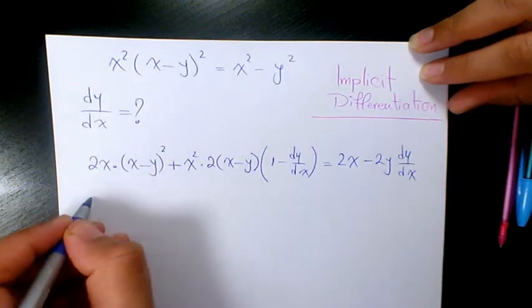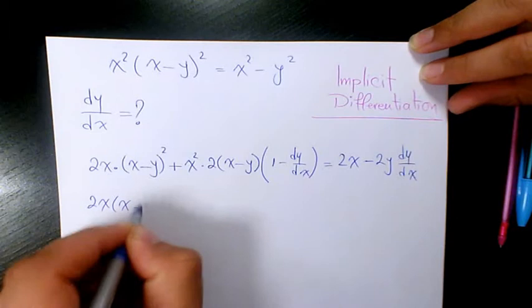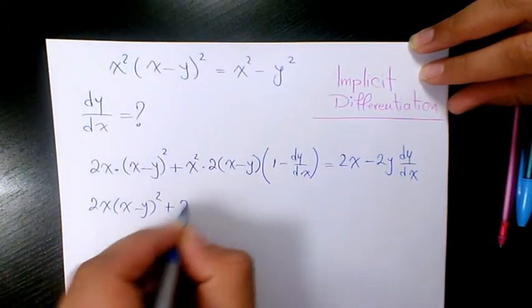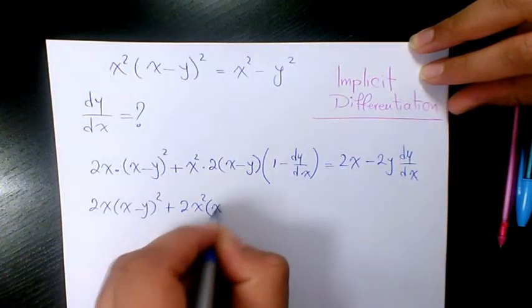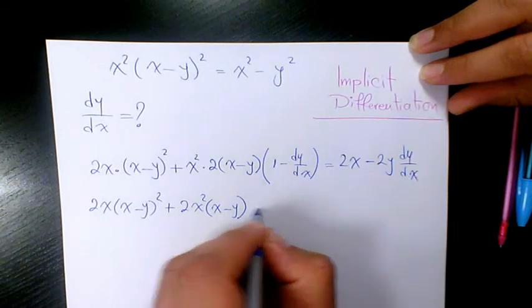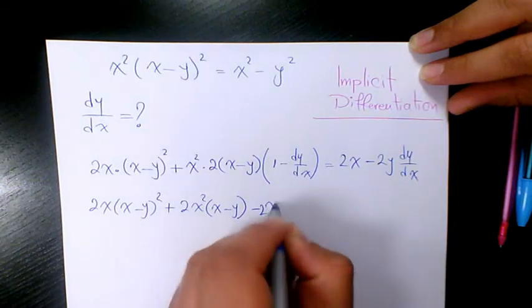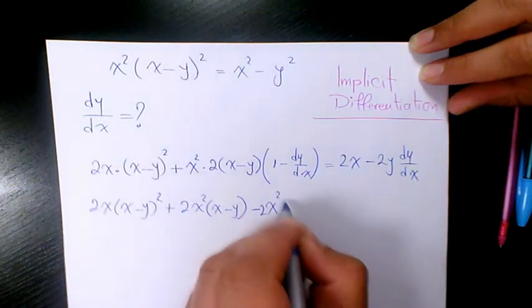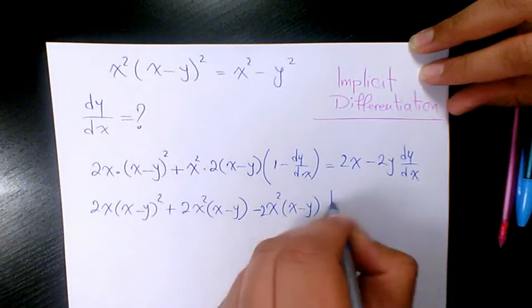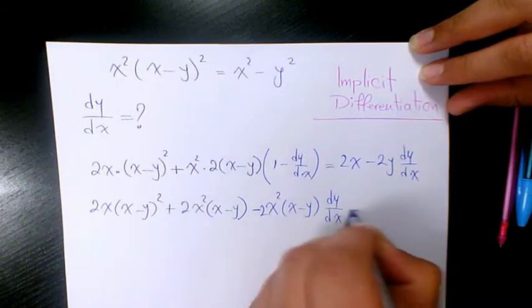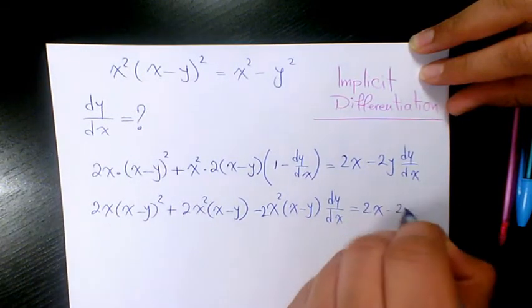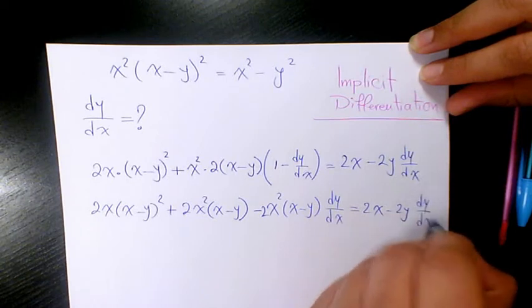So that gives us 2x(x minus y) squared plus 2x squared(x minus y) minus 2x squared(x minus y) dy/dx equals 2x minus 2y dy/dx.